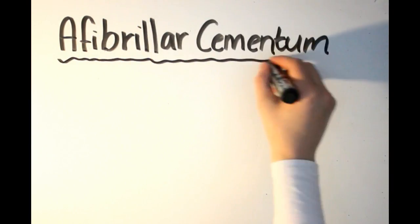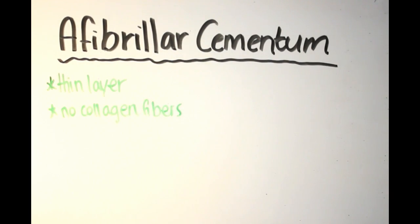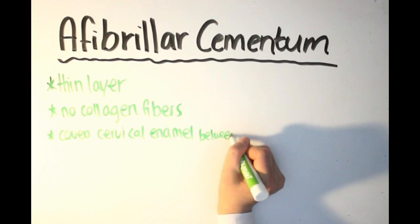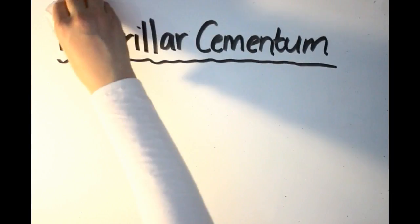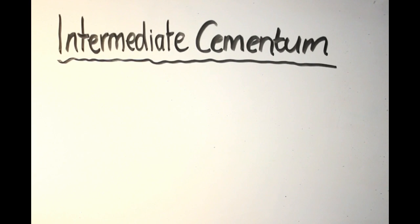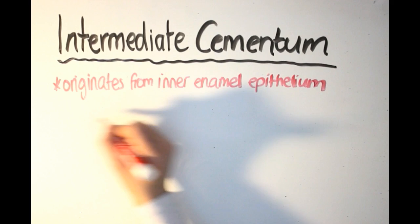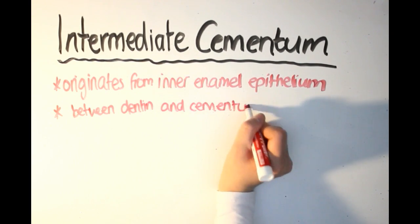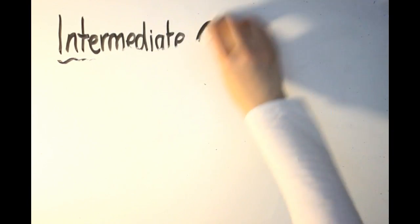Finally, we have afibrillar and intermediate cementum. Afibrillar cementum is a thin acellular layer of cementum which does not contain collagen fibers. It is found between cementum and dentin. It consists of a well-mineralized ground substance that may be of epithelial origin. On the other hand, intermediate cementum originates from the inner enamel epithelium and stays between the dentin and cementum to protect the dentin.